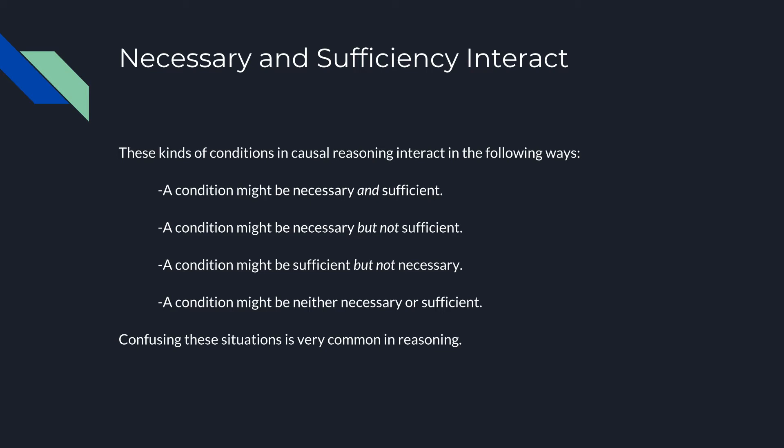When these two types of conditions interact is when people start making reasoning errors. If we have two conditions, there are four ways in which they can interact: a condition can be necessary and sufficient; a condition might be necessary but not sufficient; a condition might be sufficient but not necessary; and a condition might be neither necessary nor sufficient.